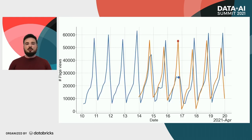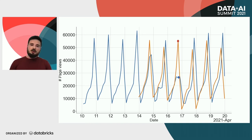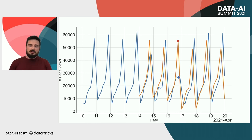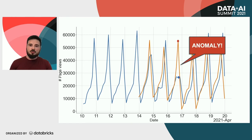After we decompose the signal and choose the right model for our specific time series, we can see how it performs. Our model looks at a couple of days behind and expects the same pattern as in the previous days. But the real data has some decrease, so the model shows an anomaly on that specific observation.